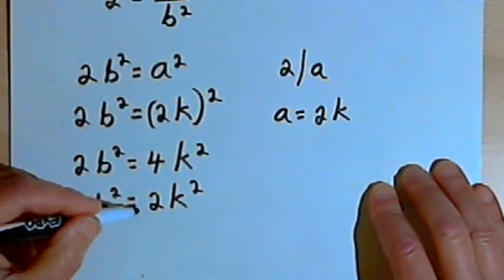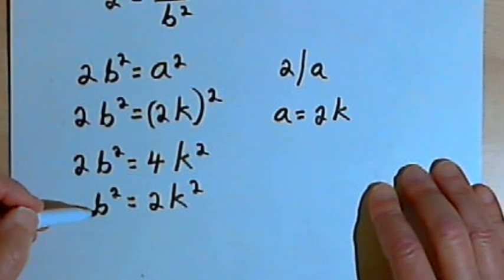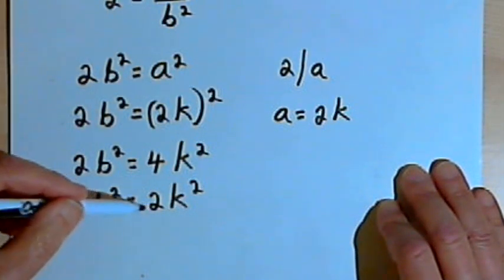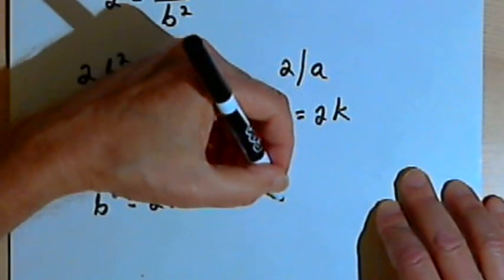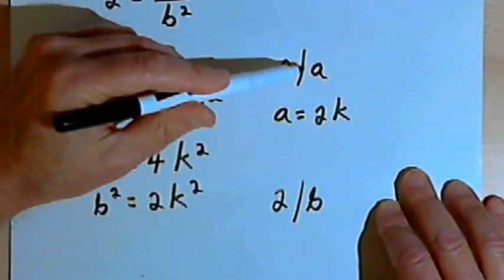Well, if b squared equals 2k squared, that means b squared is a number that could be divided by 2. And that means that b is a number that could be divided by 2. So 2 divides b. I already said that 2 divides a.